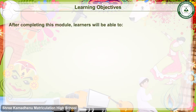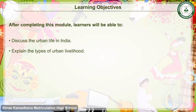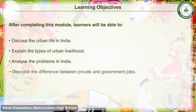Learning Objectives: After completing this module, learners will be able to discuss urban life in India, explain the types of urban livelihood, analyze the problems in India, and describe the difference between private and government jobs.